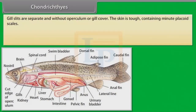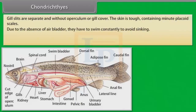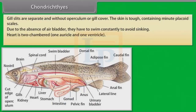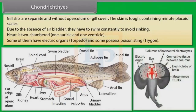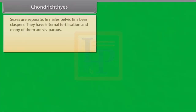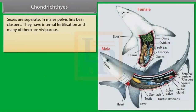Their skin is tough, containing minute placoid scales. Due to the absence of air bladder, they have to swim constantly to avoid sinking. Heart is two-chambered — one auricle and one ventricle. Some of them have electric organs (torpedo) and some possess poison sting (Trigon). Sexes are separate. In males, pelvic fins bear claspers. They have internal fertilization and many of them are viviparous.